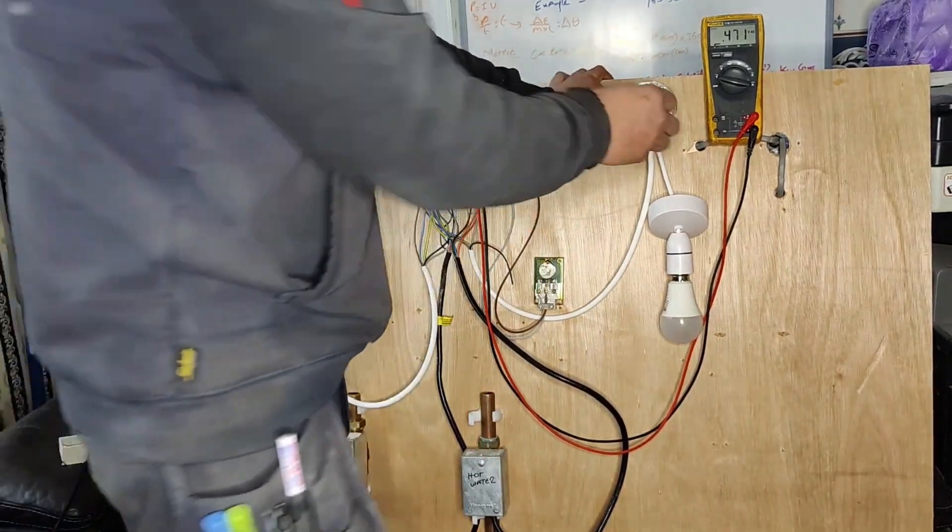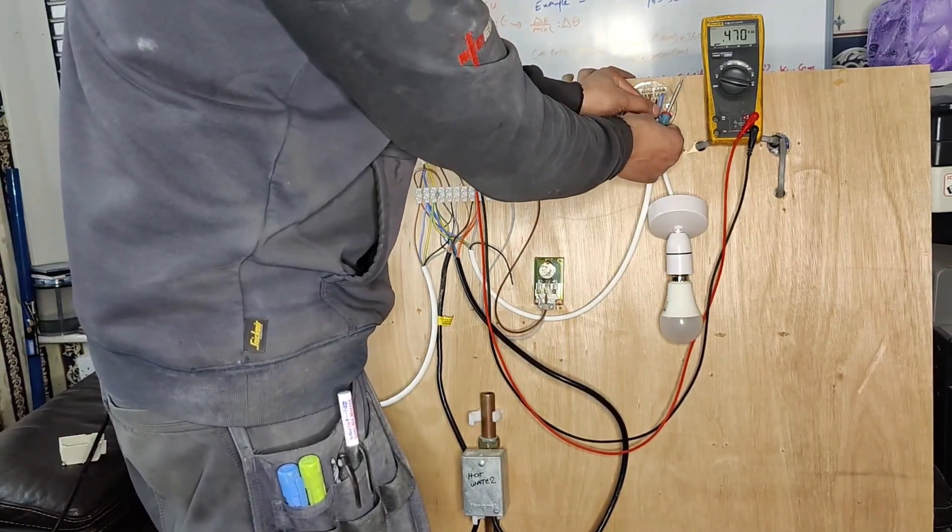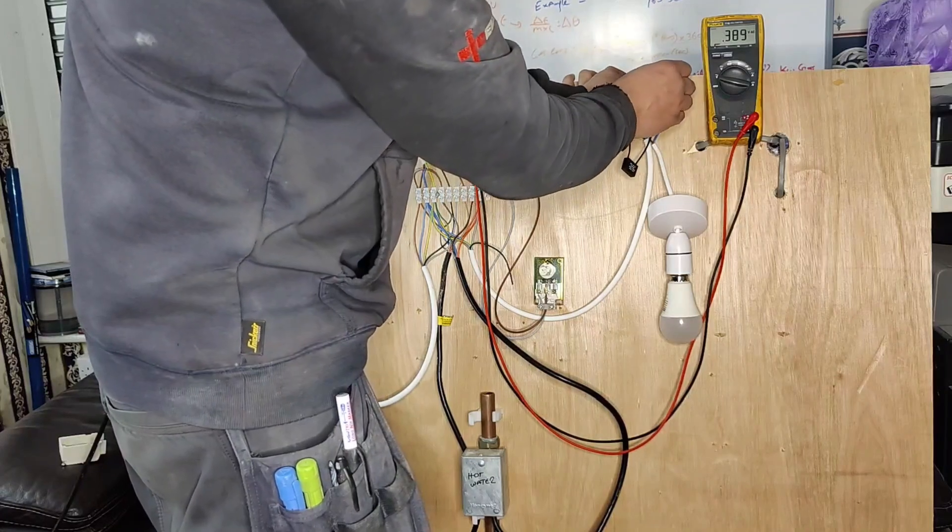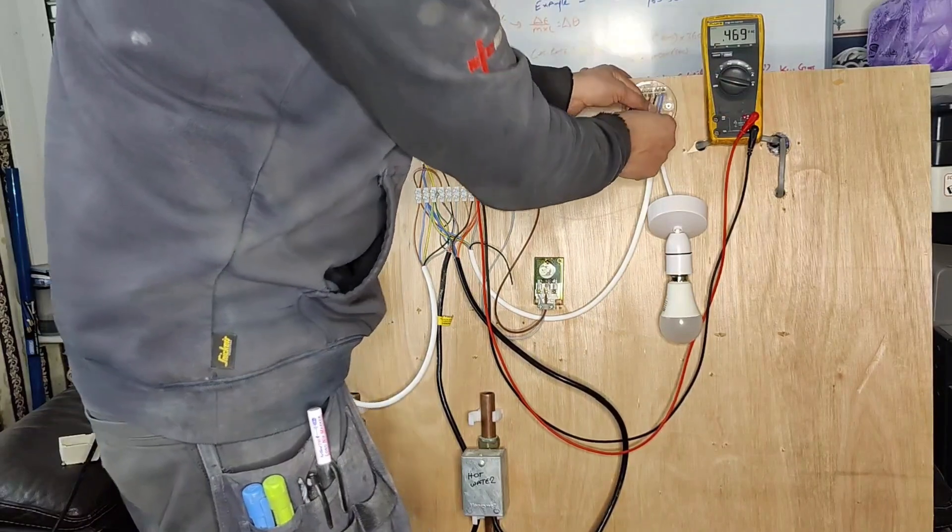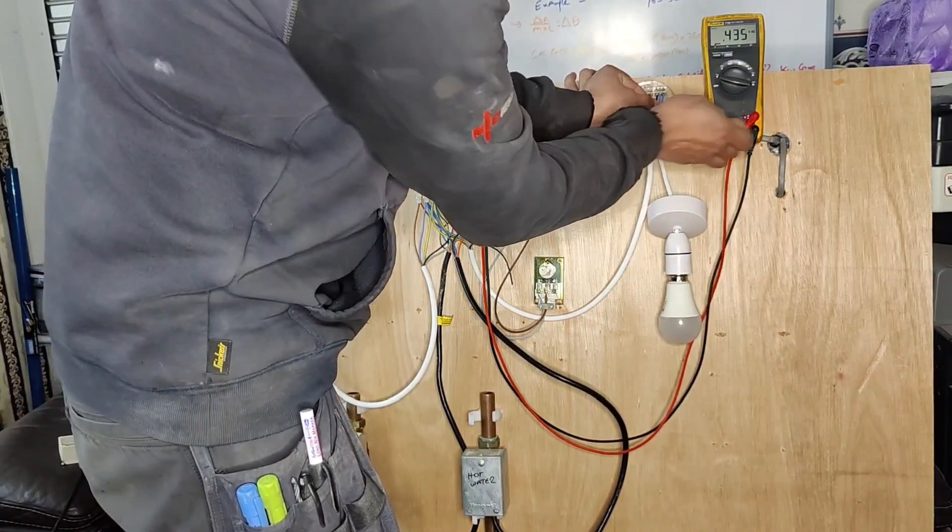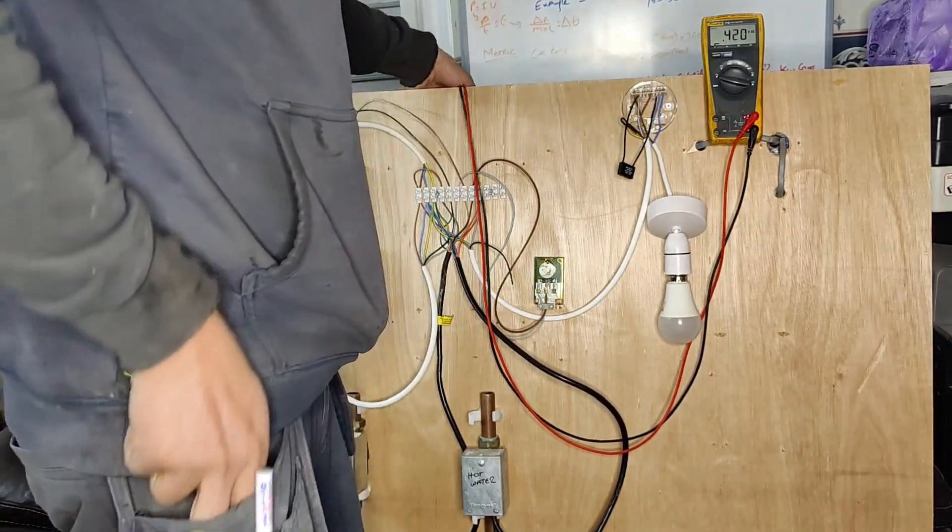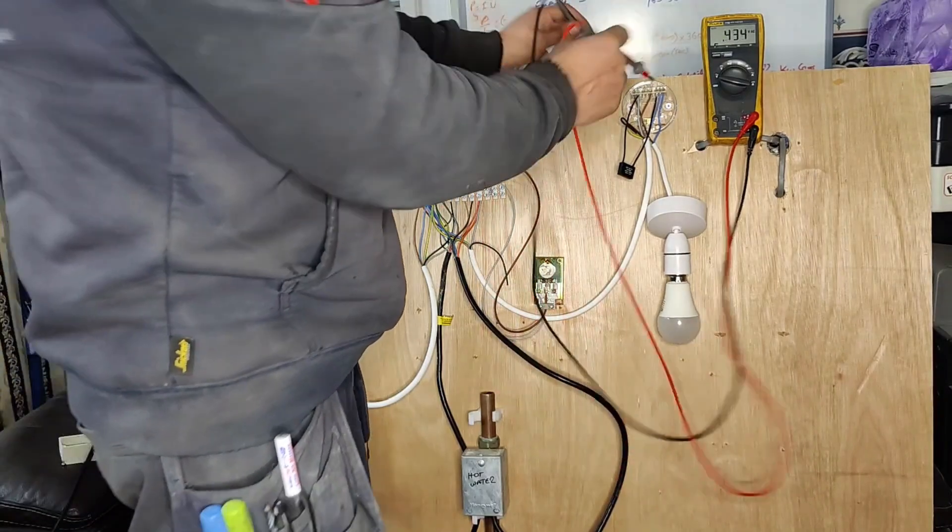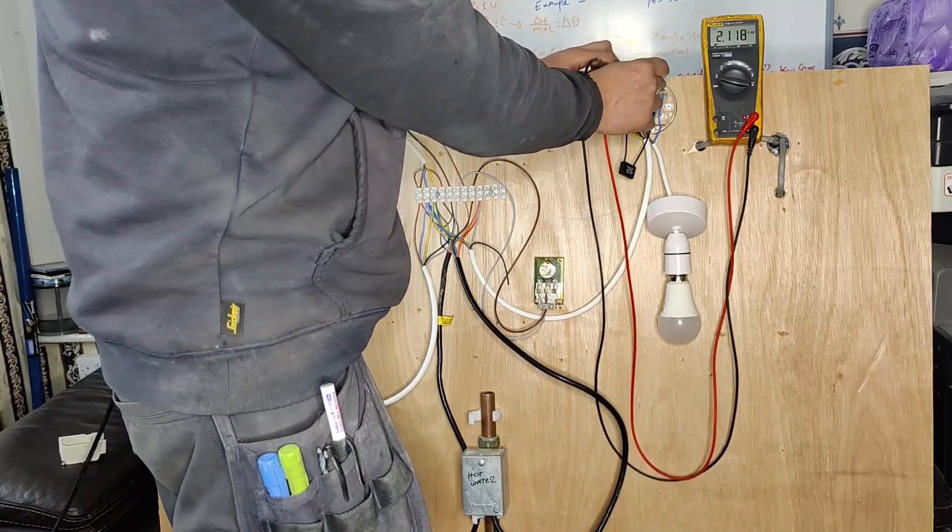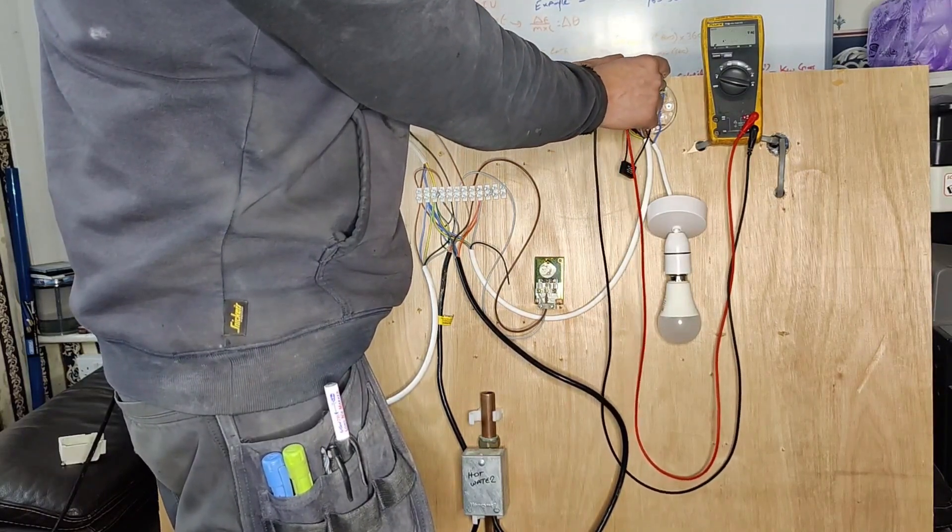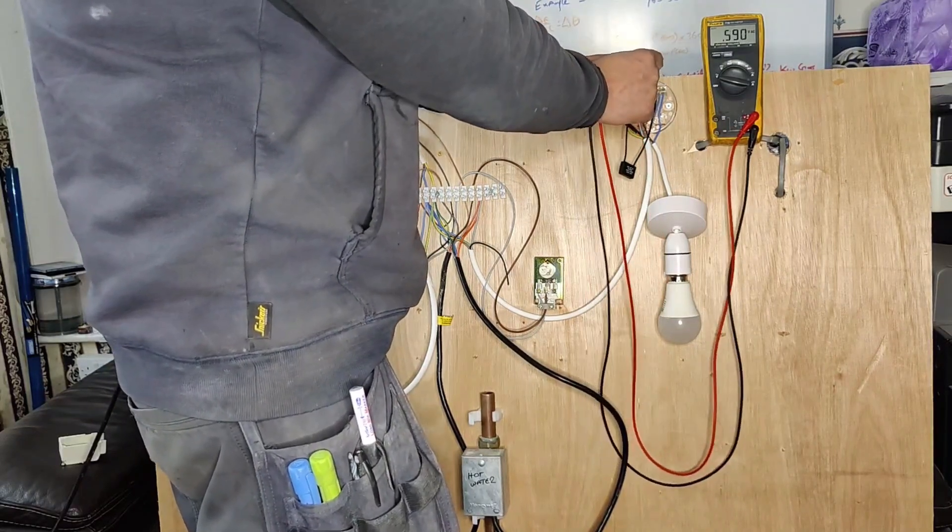If I remove the leg from the earth point and connect it to the neutral point, let's check it against neutral. As you can see there's literally nothing there now, 0.155 volts.